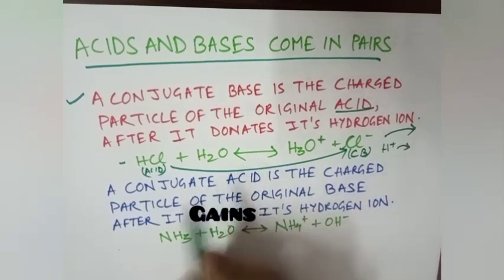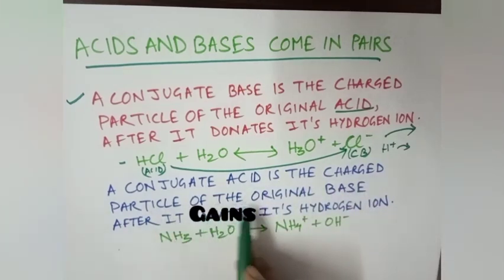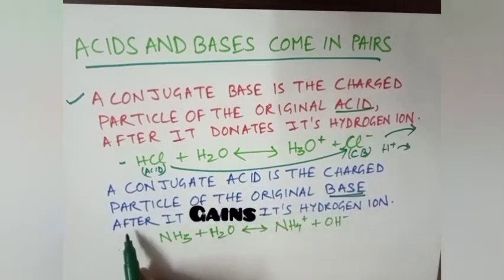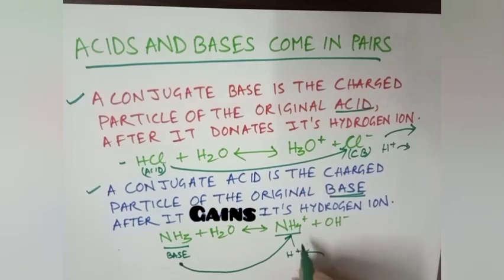Similarly, conjugate acid is the charged particle of the original base after it gains its hydrogen ion. If for example you are taking ammonia NH3 as base, that is the original base, when it gains one hydrogen ion it becomes NH4+. So the conjugate acid for the original base NH3 will be NH4+.